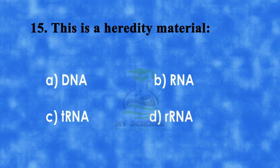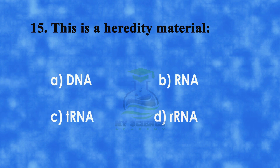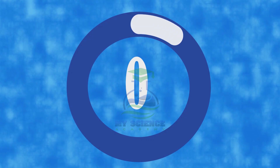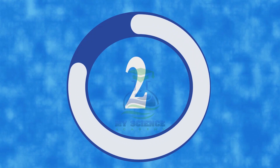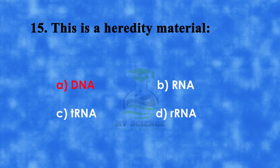Question 15: This is the hereditary material — A. DNA, B. RNA, C. Transfer RNA, or D. Ribosomal RNA. Correct answer is A. DNA.